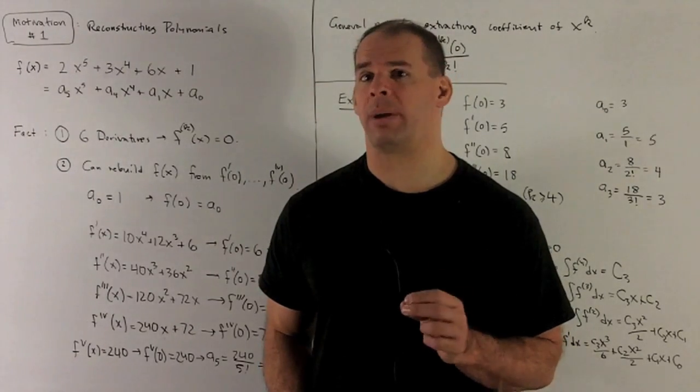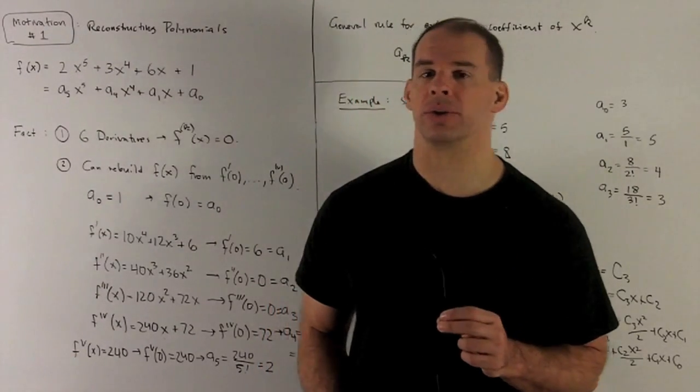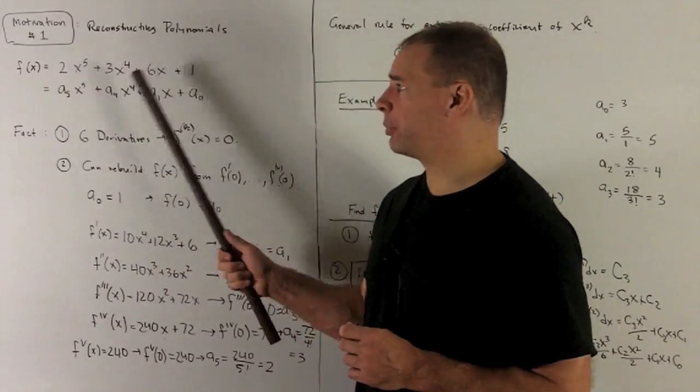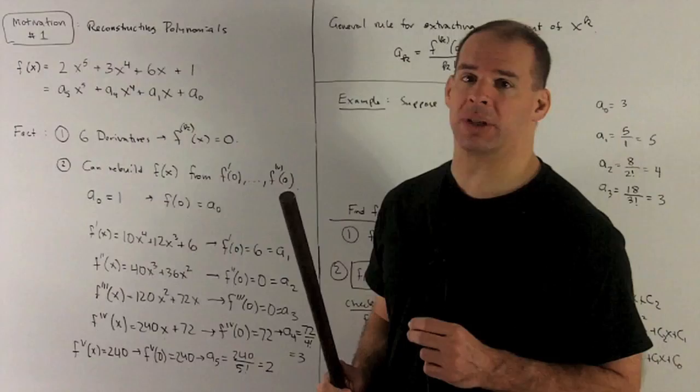Let's look at some motivation for Maclaurin polynomials and Taylor polynomials. I'm going to start with the polynomial 2x^5 + 3x^4 + 6x + 1.